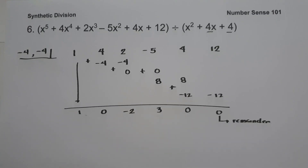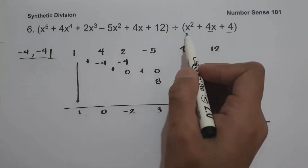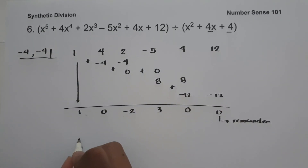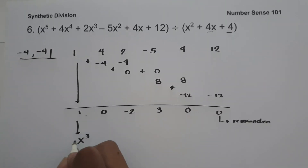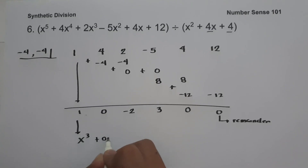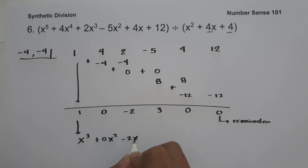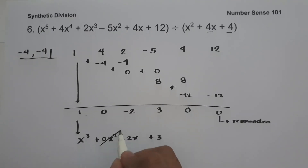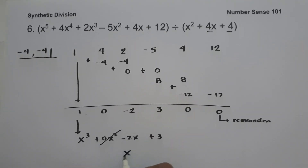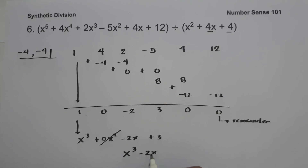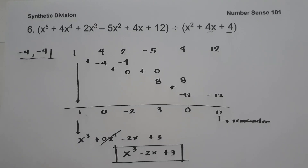To write our answer, we have x to the 5th divided by x squared, which is x cubed with coefficient 1. Then 0x squared minus 2x plus 3. Since the coefficient of x squared is 0, we cancel that term, giving us x cubed minus 2x plus 3. And this will be our answer. I hope you've learned from this video. Thank you so much for watching, and God bless us all.